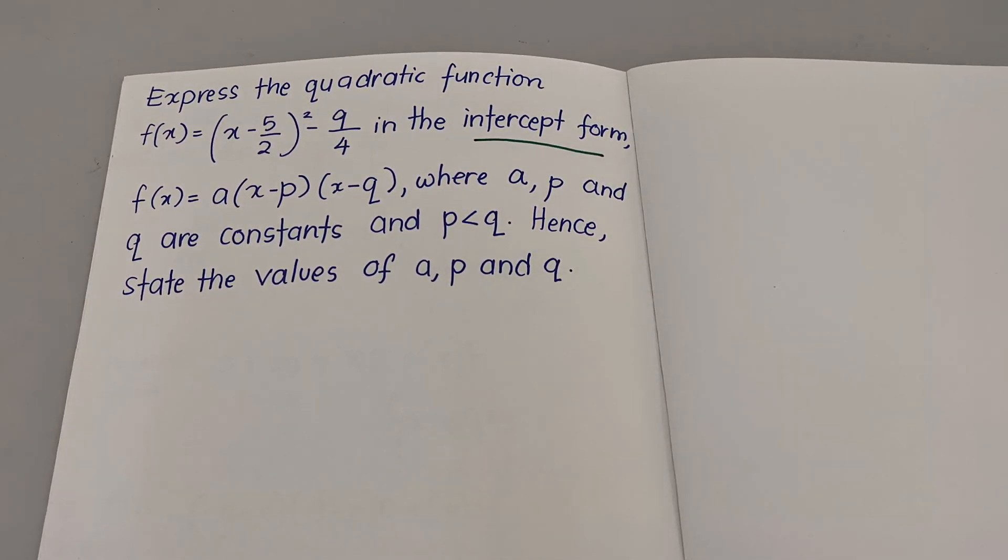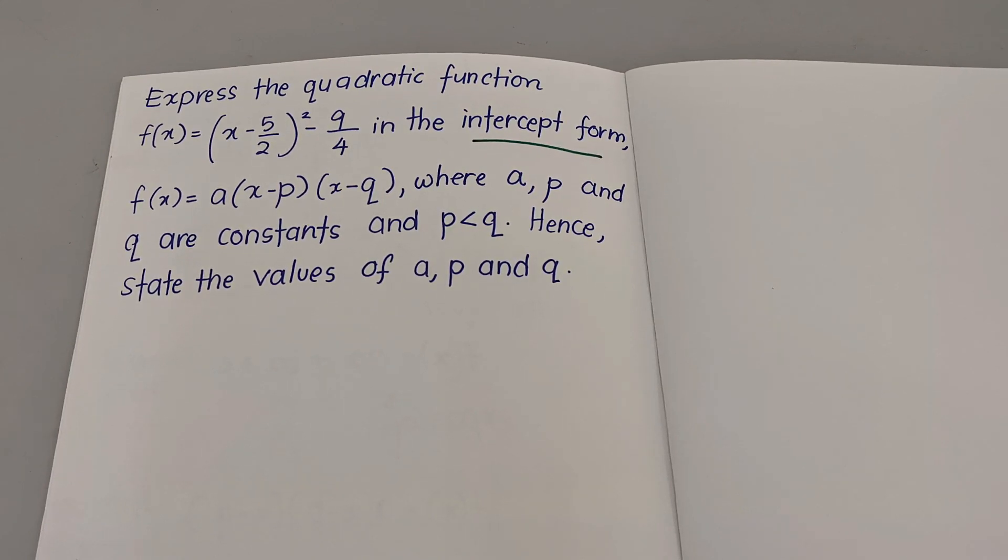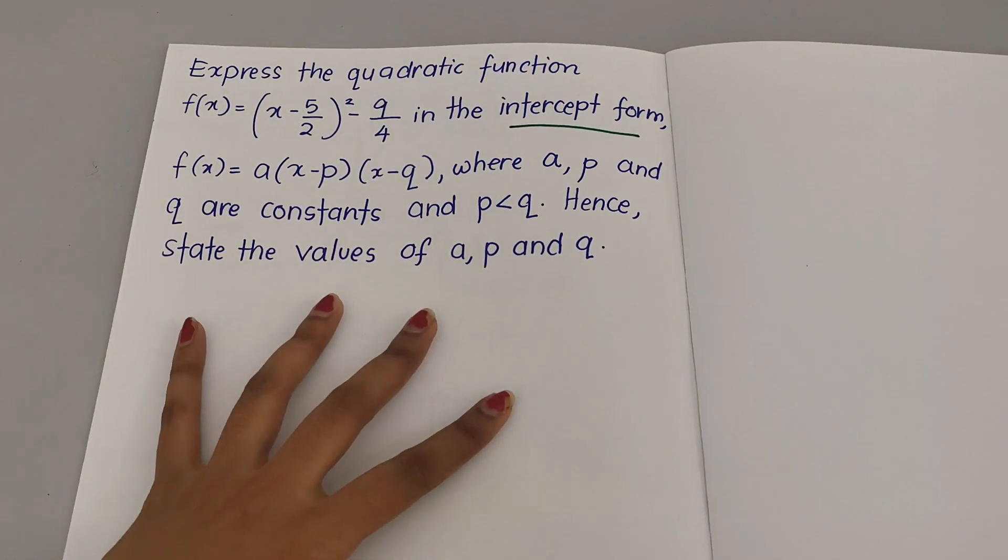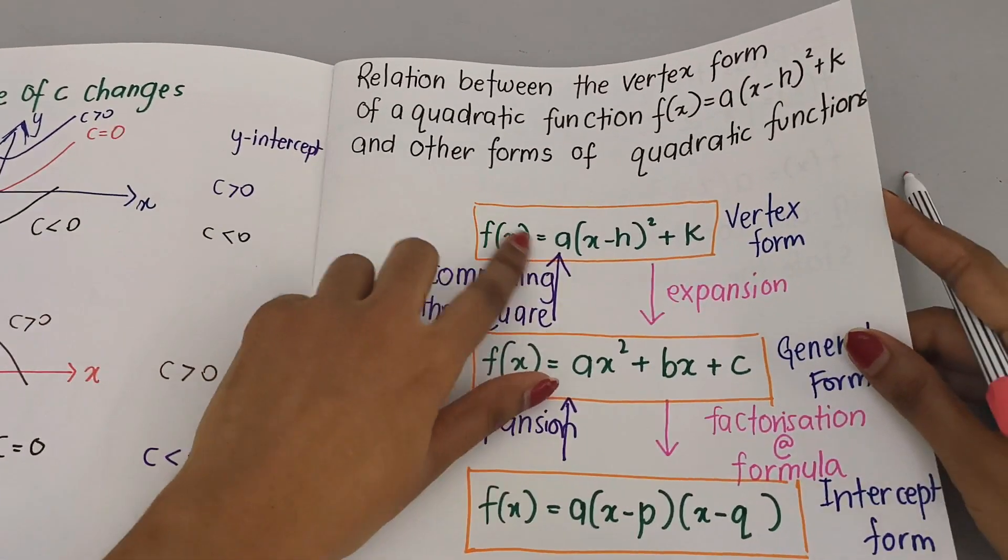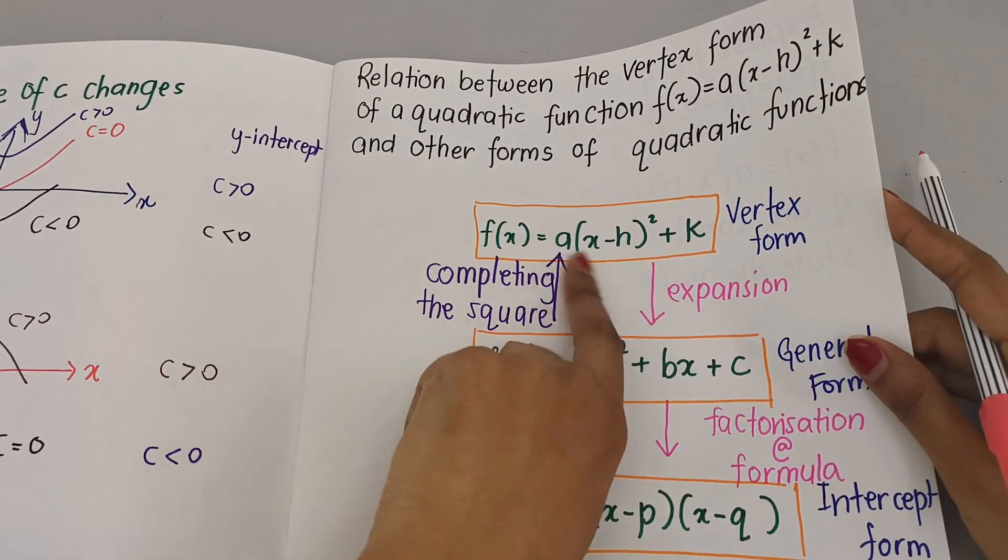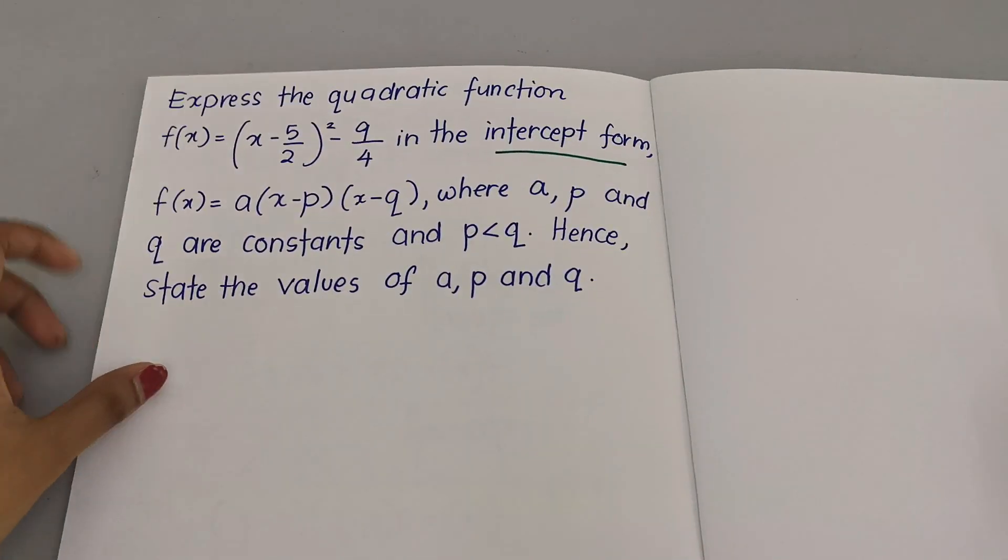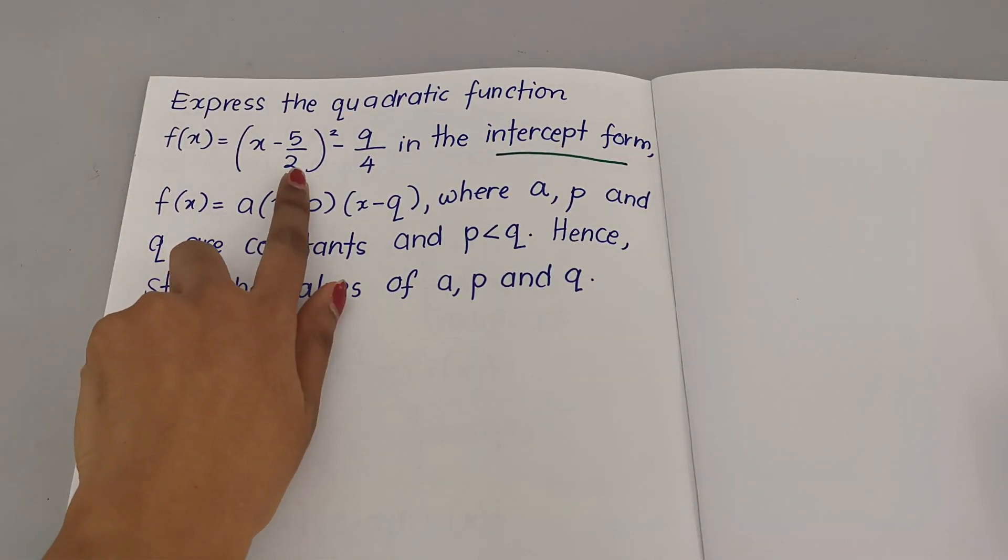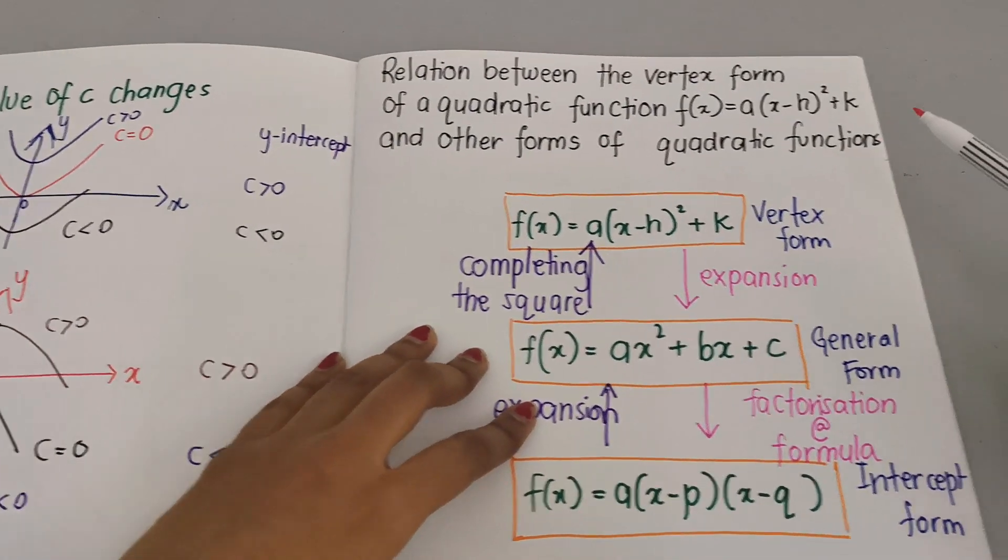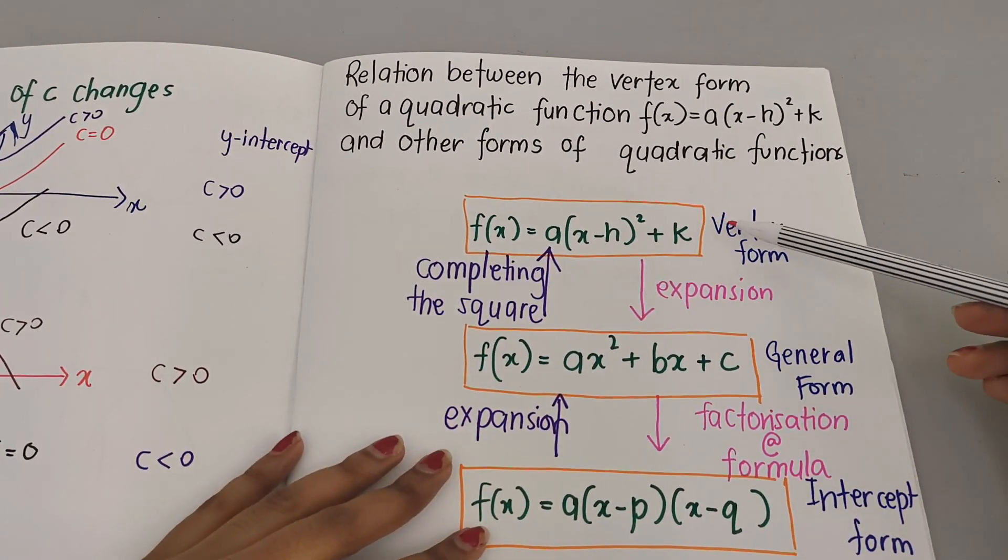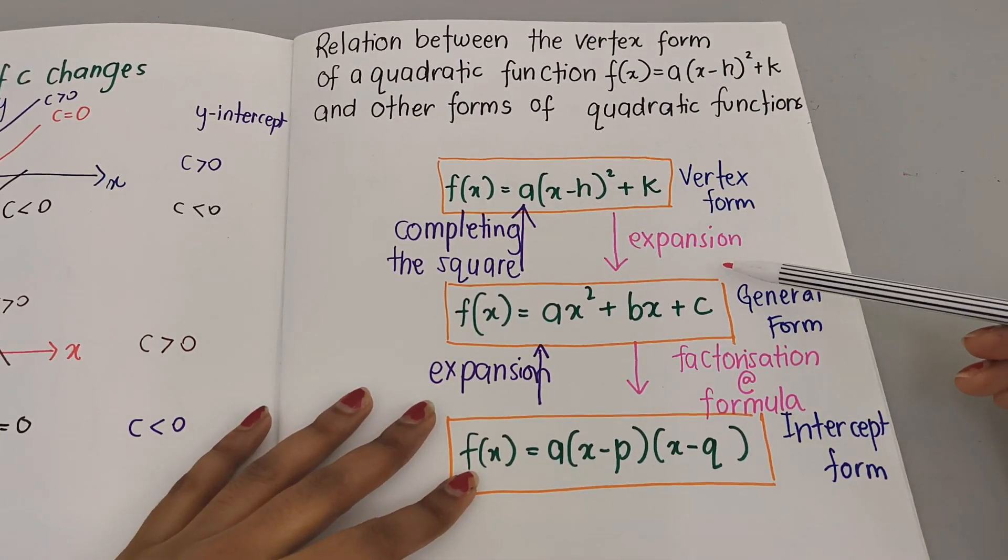State the values of a, p, and q. Now since this is in which format? You can see this is in vertex form. Since it's in vertex form, now we have to change it to intercept form. First, what we need to do: we need to expand, get the general form, after that we factorize.